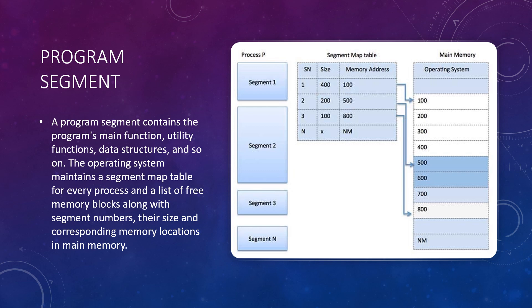The operating system maintains a segment map table for every process and a list of free memory blocks along with the segment numbers, their size, and corresponding memory locations in main memory.